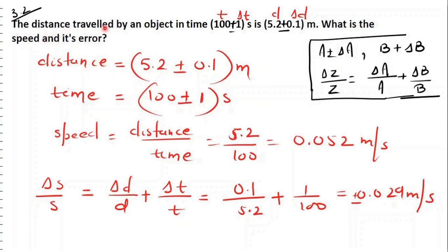Now come to the next question. The distance traveled by an object — time is 100 seconds, and the error in time is 1 second. The distance is 5.2 plus minus 0.1 meter, so the distance is 5.2 and the error del D is 0.1 meter. Now we have to calculate the speed and its error.